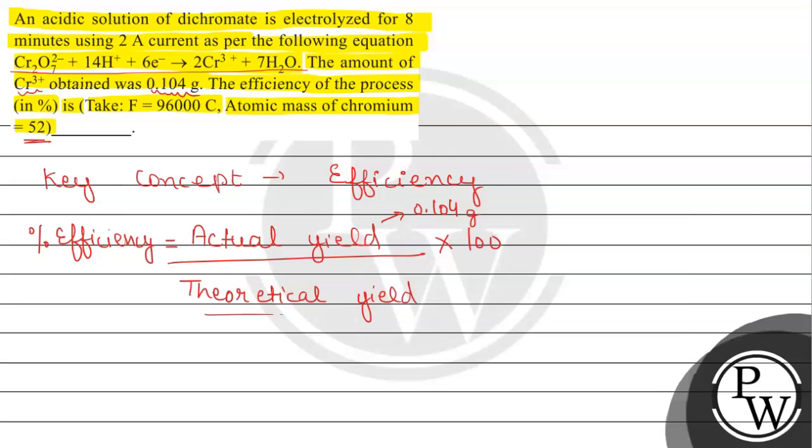Now we can put all these values: actual yield is 0.104, theoretical yield is 0.173 grams, multiplied by 100. By this division we get 0.6011 × 100 = 60.11 percent. So the answer of this question is 60.11 percent. Hope you understood it well, best of luck.